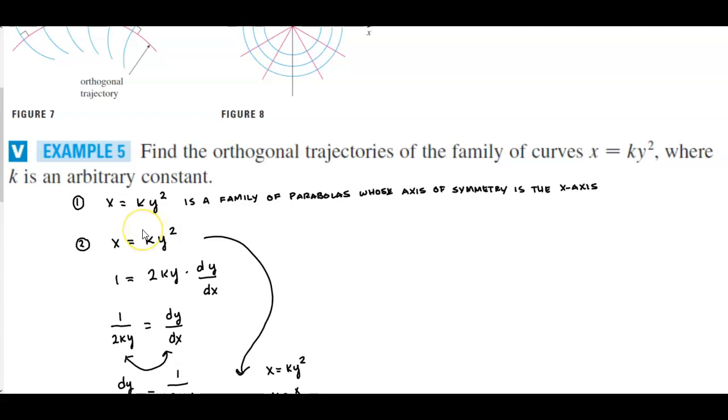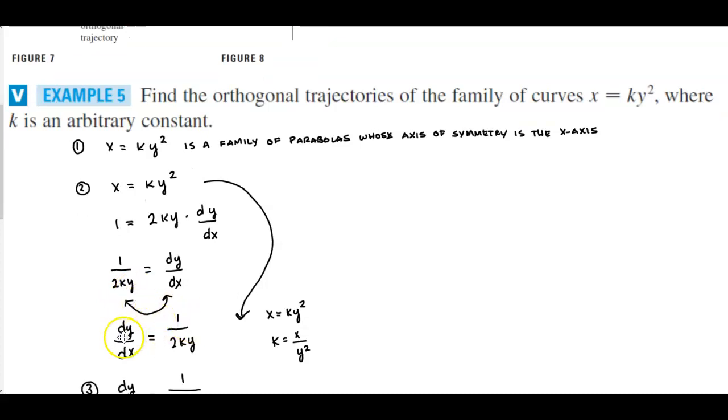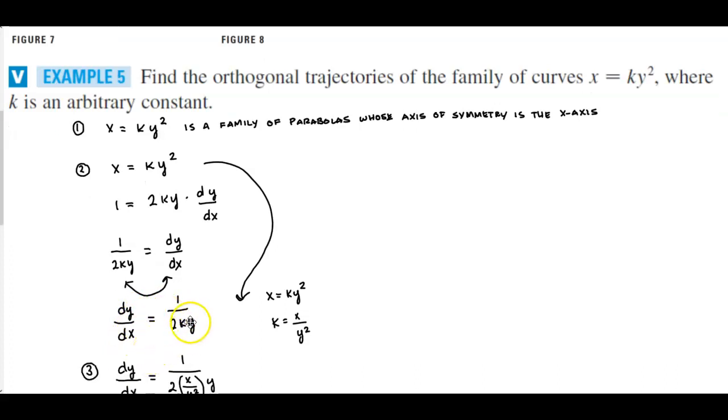In step two, what we want to do is differentiate. So we get 1 which is equal to 2 times k times y times dy over dx. Now isolating dy over dx, we're going to divide both sides by 2 times k times y, and then we're just reordering so we have dy/dx on the left side and on the right side is 1 over 2 times k times y.